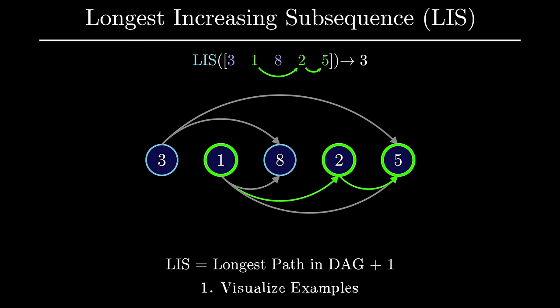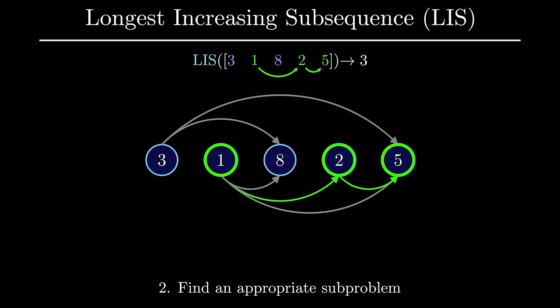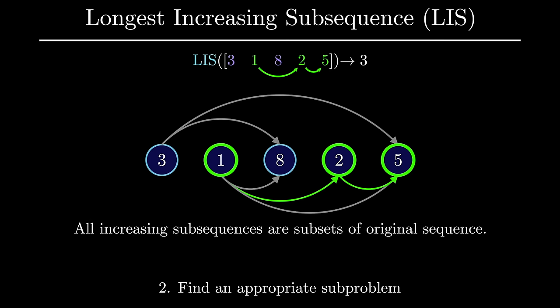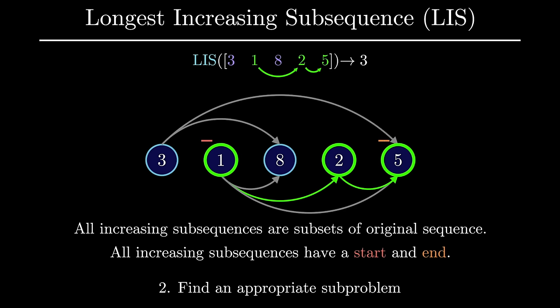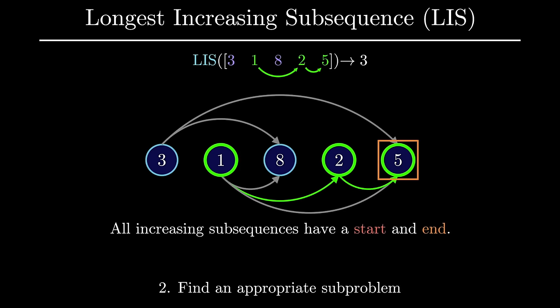The next step for solving a dynamic programming problem is to find an appropriate subproblem — a simpler version of our overall problem. Finding subproblems can be tricky, but we know the longest increasing subsequence is going to be a particular subset of our initial sequence. One way to specify this subset is through the starting point and the ending point. Every increasing subsequence will have a starting and ending point within the original sequence. You can solve this problem with either choice, but focusing on the ending point of a subsequence is a bit more intuitive.